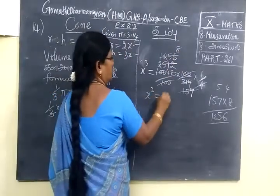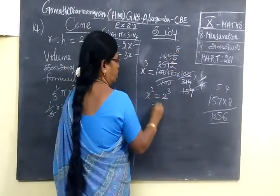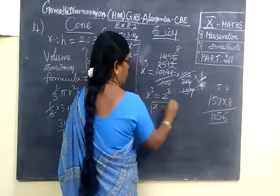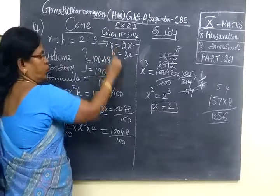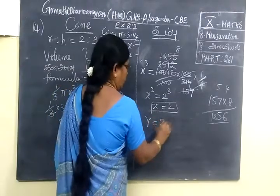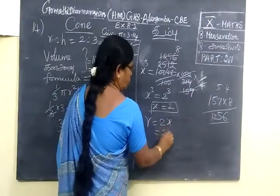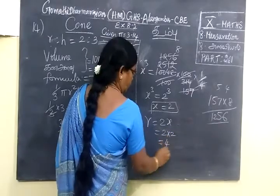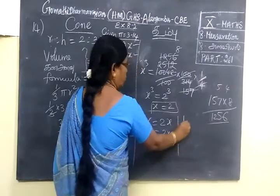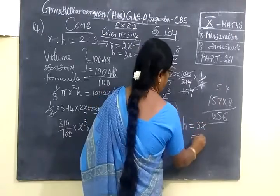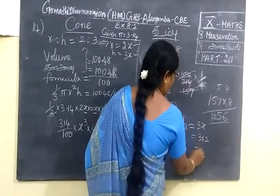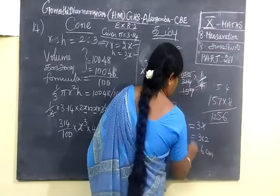So K cubed equals 8. K equals 2. So R equals 2K equals 2 into 2 equals 4. Also H equals 3K, so 3 into 2 equals 6 cm.